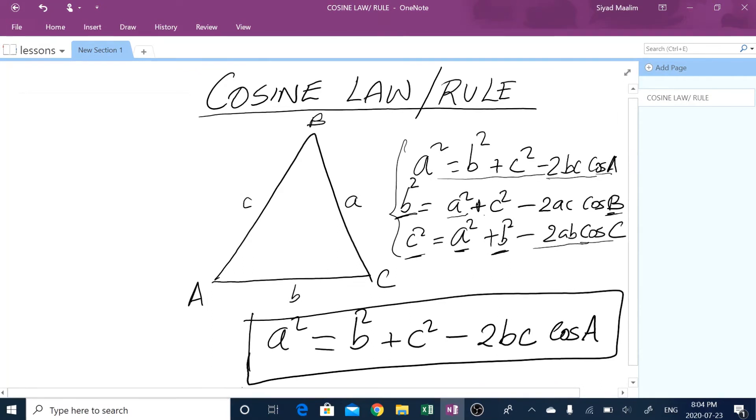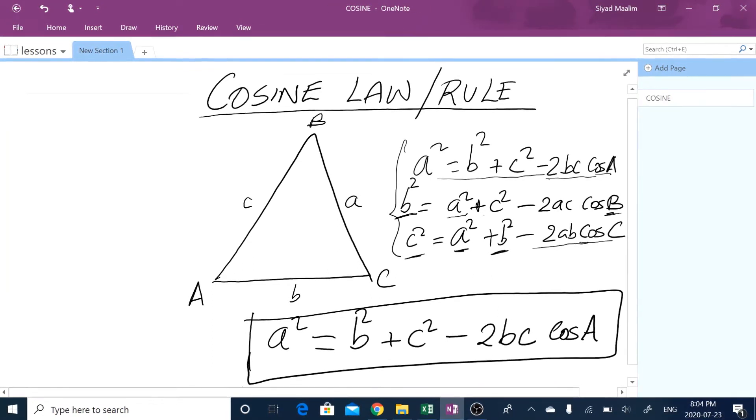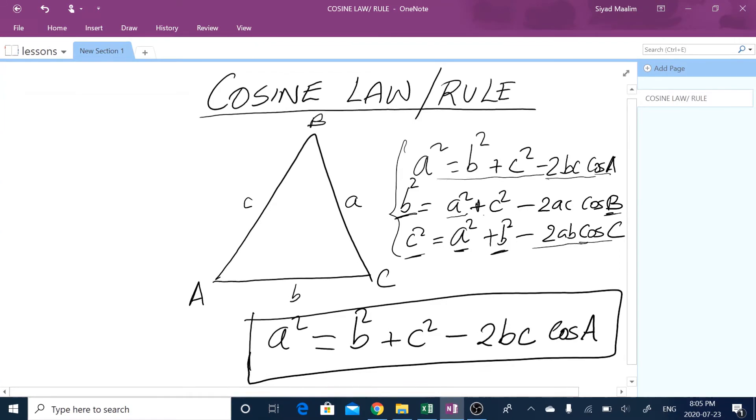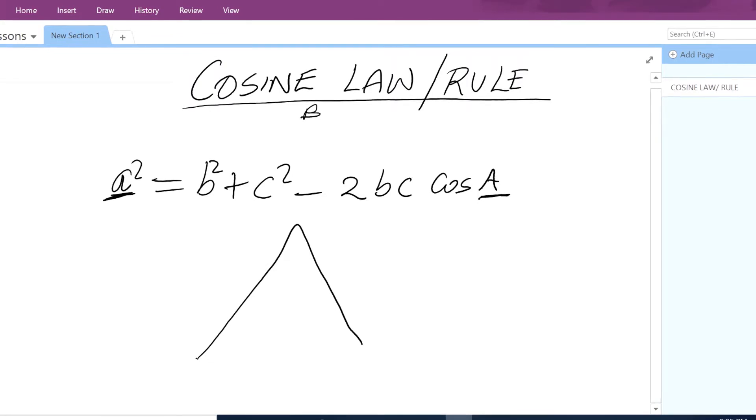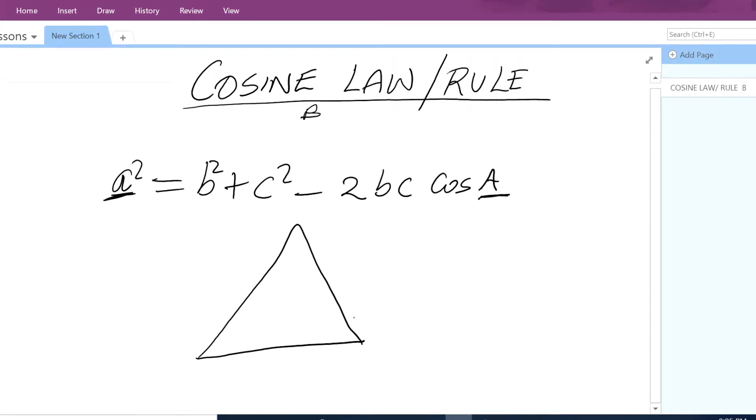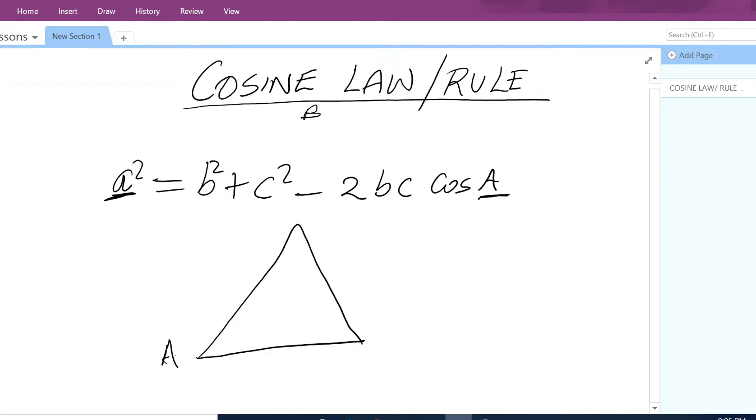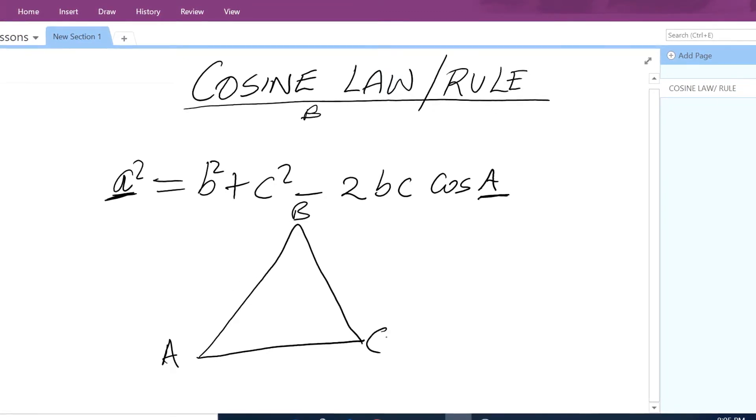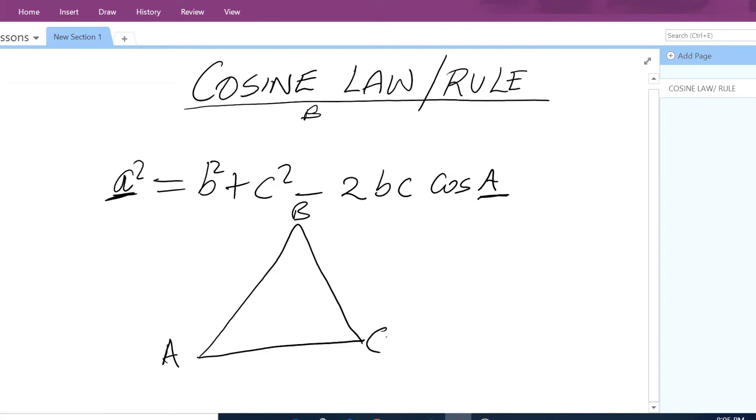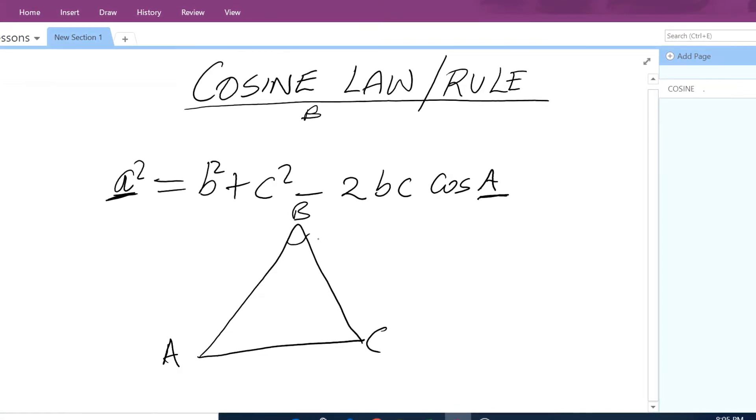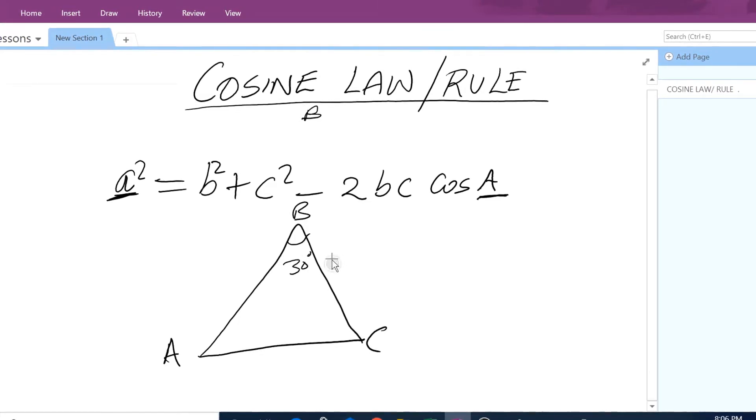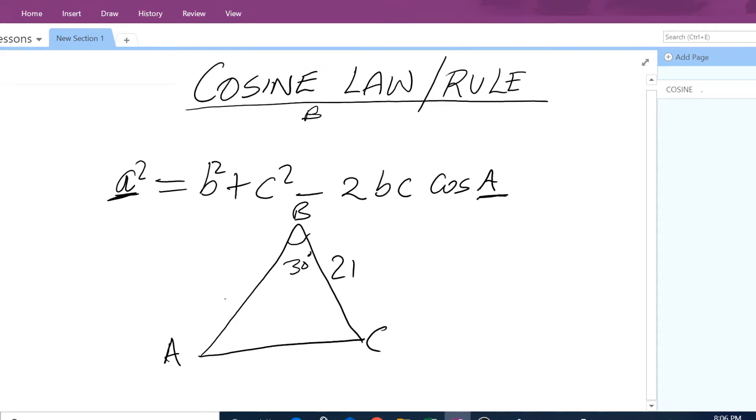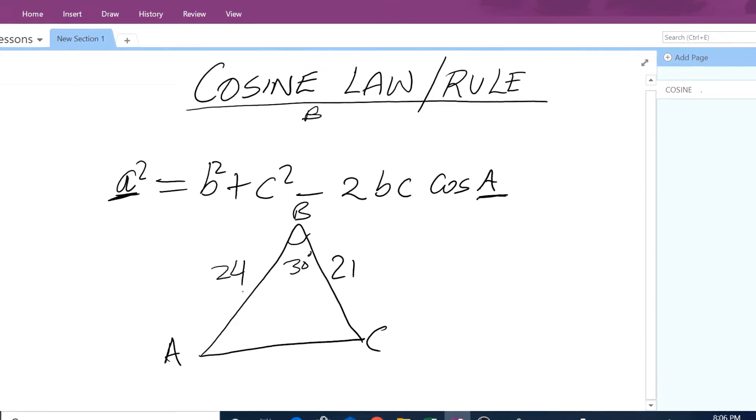Let's start with an example. So let's say we have a triangle A, B, C, and we are given this angle, angle B, as 30 degrees, and side a is 21, and side c is 24.